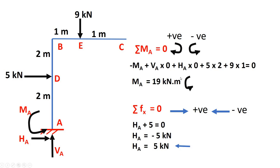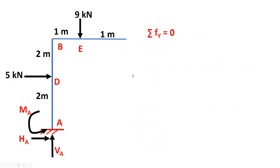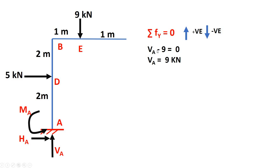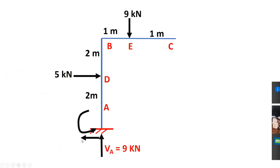The positive sign confirms our assumed sign convention was correct, so MA is acting in the anti-clockwise direction. Now, sum of forces in the y-direction equals zero. Vertical reaction VA upward is positive, downward is negative. VA minus 9 equals zero, so VA equals 9 kN. We have now determined all three reactions.